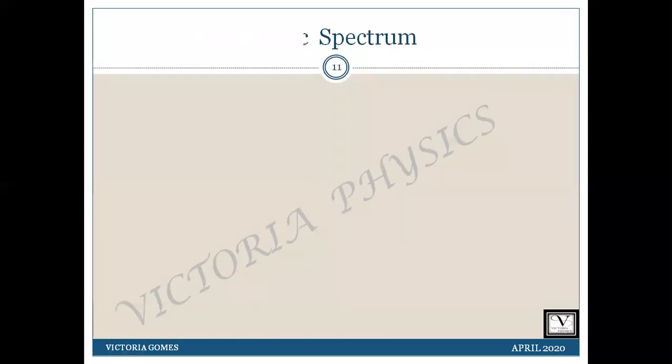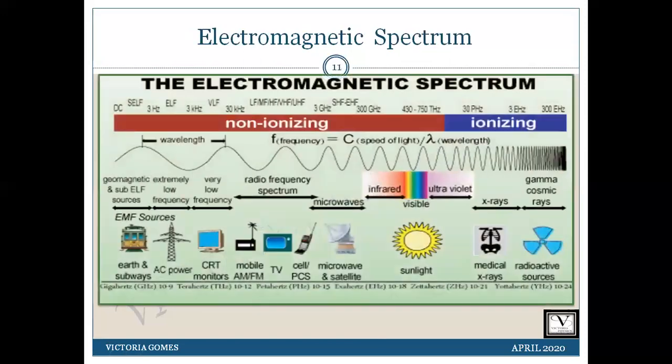So I guess you got a clear picture about this electromagnetic spectrum. This will give you a very clear idea as to where and which portion of the electromagnetic spectrum finds application in which field. The frequency, wavelength, and speed are also mentioned over here.